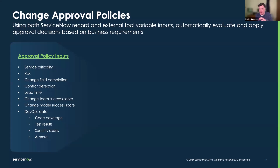We can also talk about more dynamic change approval policies. Looking at things like team success score and model success score are really important. You can look at how successful a particular model type of change is as you deploy more change models — are we within our thresholds to allow a low approval or no approval process? That can be applied to standard change as well. We'll talk about that when we talk about low risk change towards the end of the call.